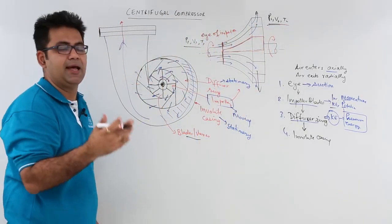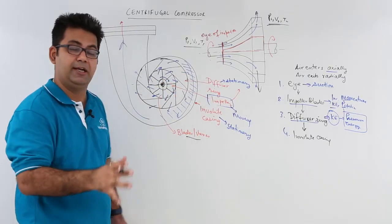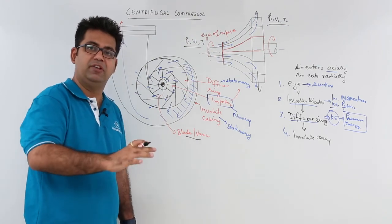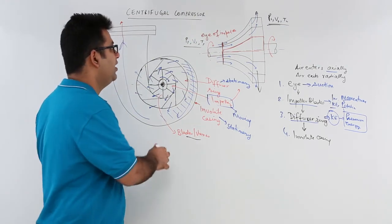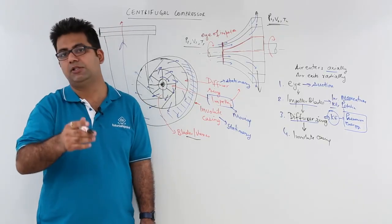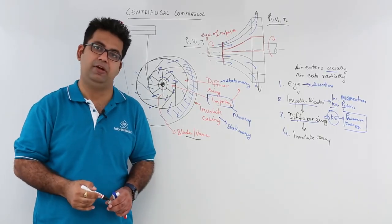So now let us understand, in the next video, after understanding this constructional detail, that how the working, or how the velocity diagram of a centrifugal compressor blade are made. So now let us talk about the velocity diagrams in the next video.